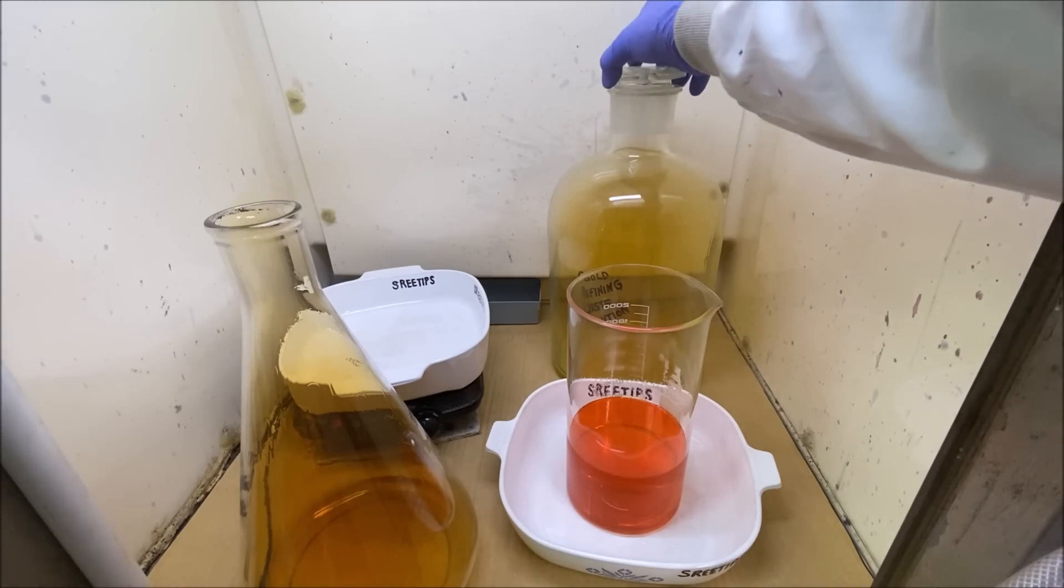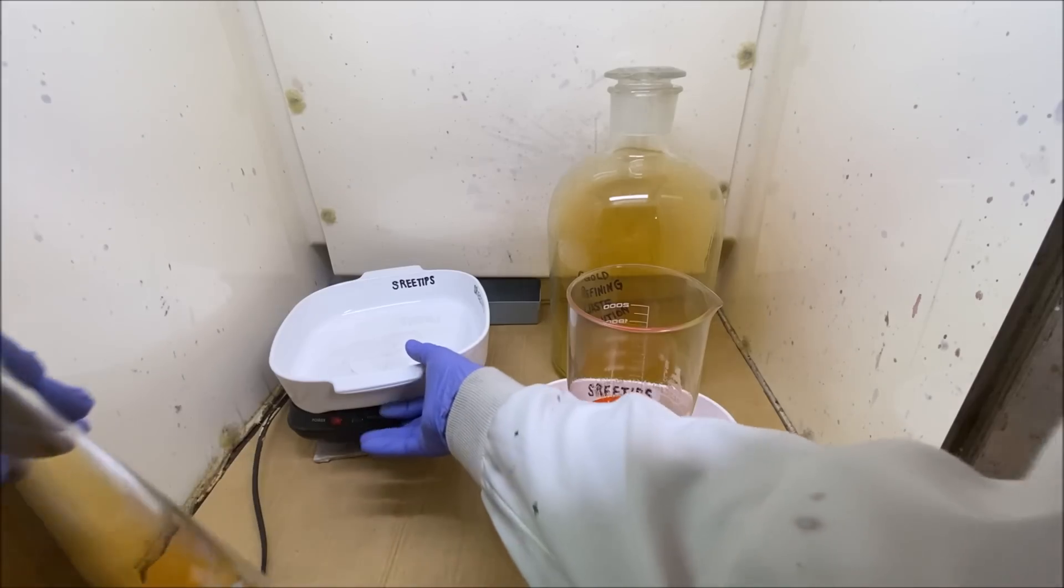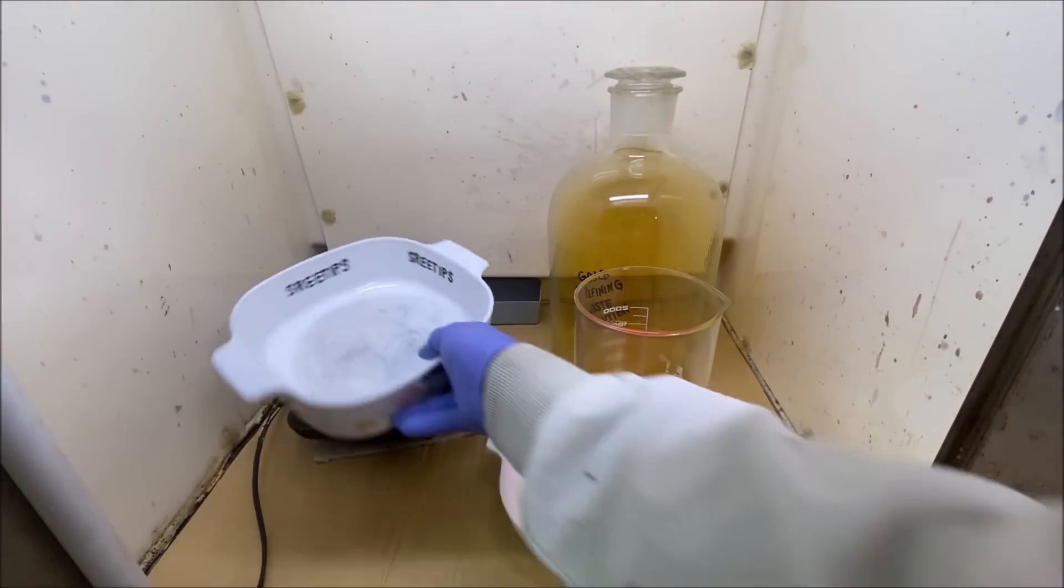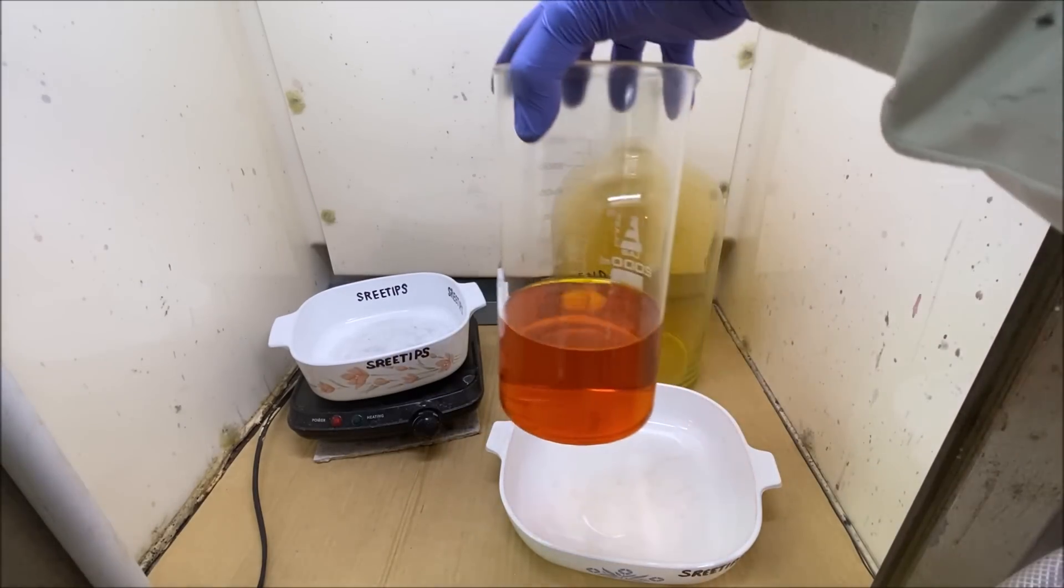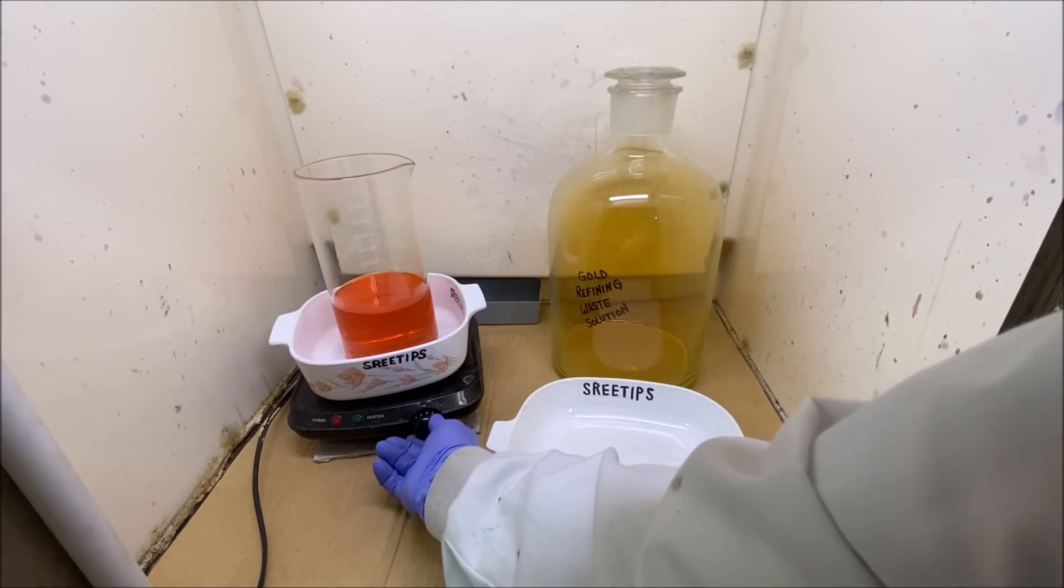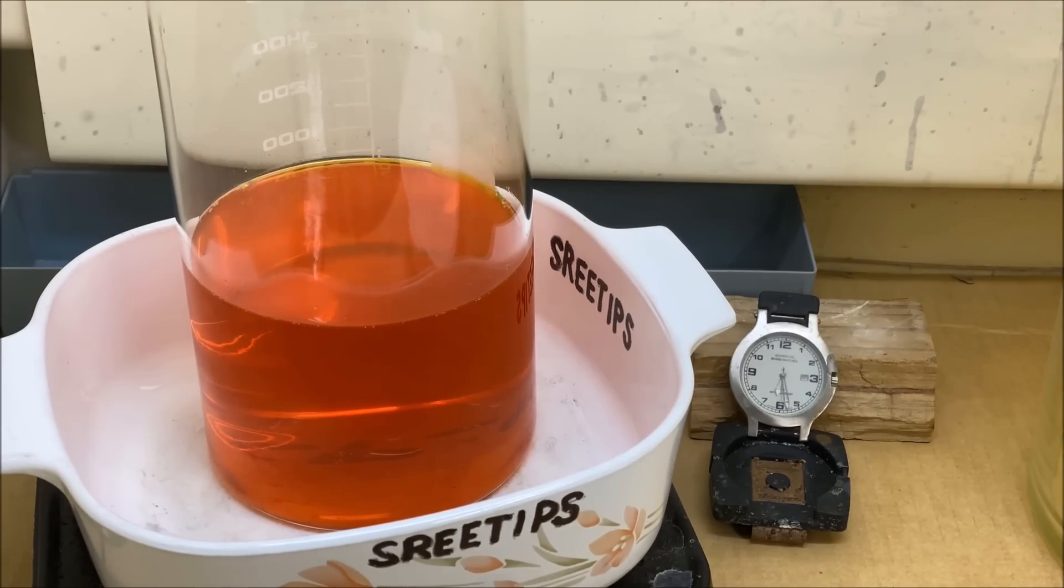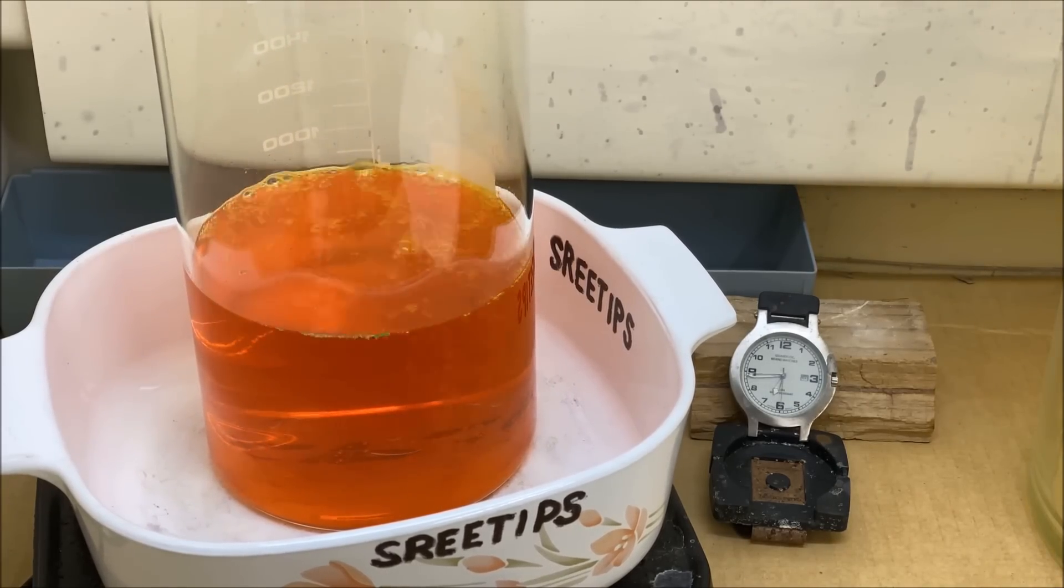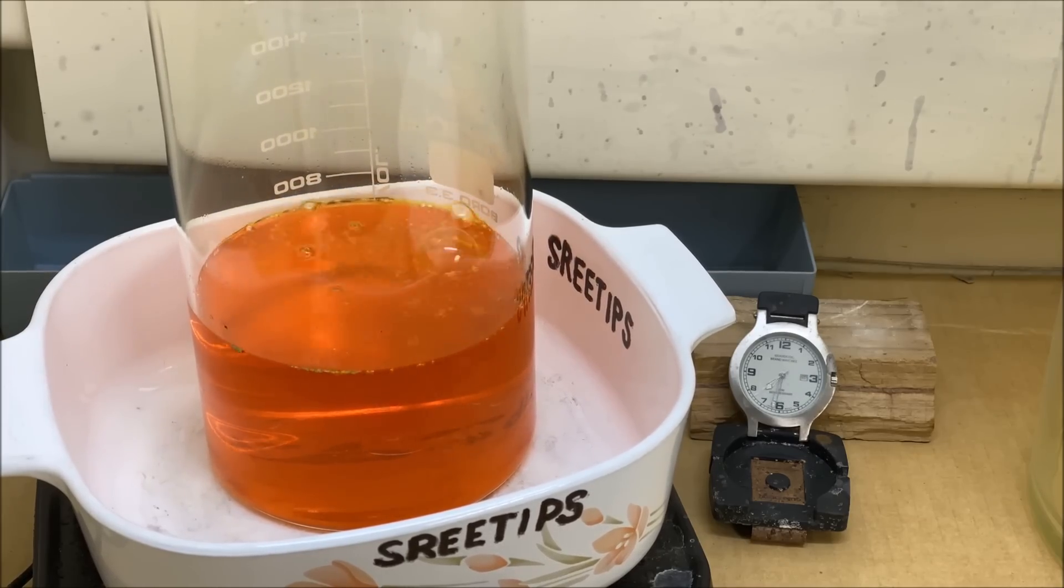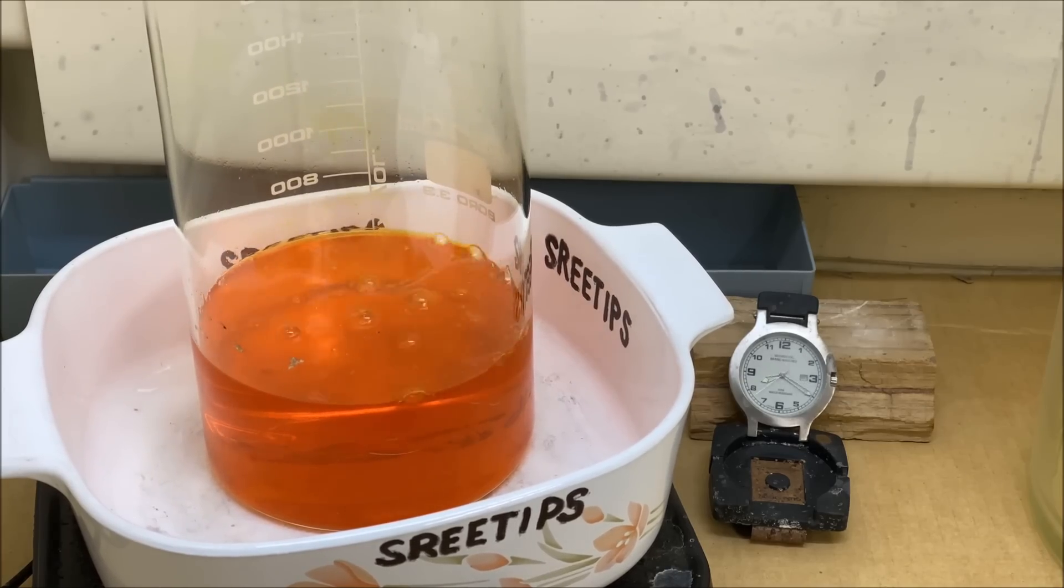Now there's going to be a bunch of extra nitric acid in the gold solution, so what we'll do is we're going to reduce this down, evaporate it down to a syrup to drive off all the extra nitric acid that's in there. In my experience, the best way to rid a gold solution of excess nitric acid is this method right here, evaporating it down to a syrup, and that will drive off any excess nitric that's in there.